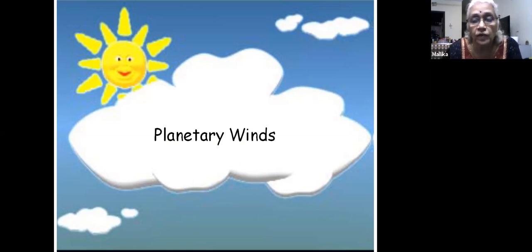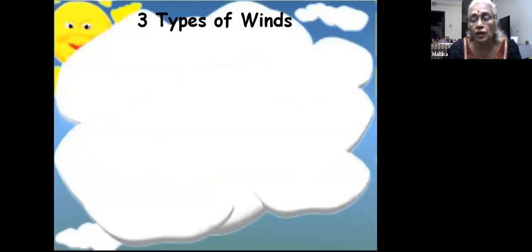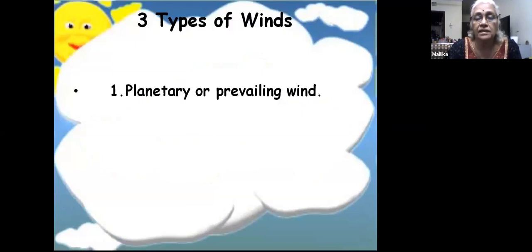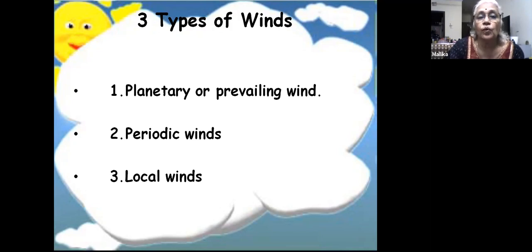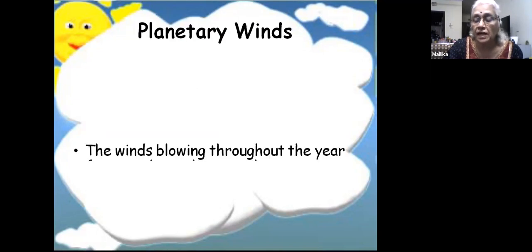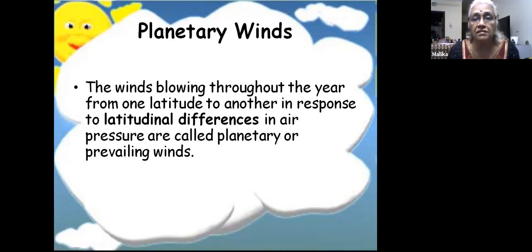Today we'll cover more information on how winds are named. We have three types of winds: planetary or prevailing winds, which we already spoke about; periodic winds; and local winds. We've already spoken about some local winds like land breeze and sea breeze because they affect the temperature of a place.